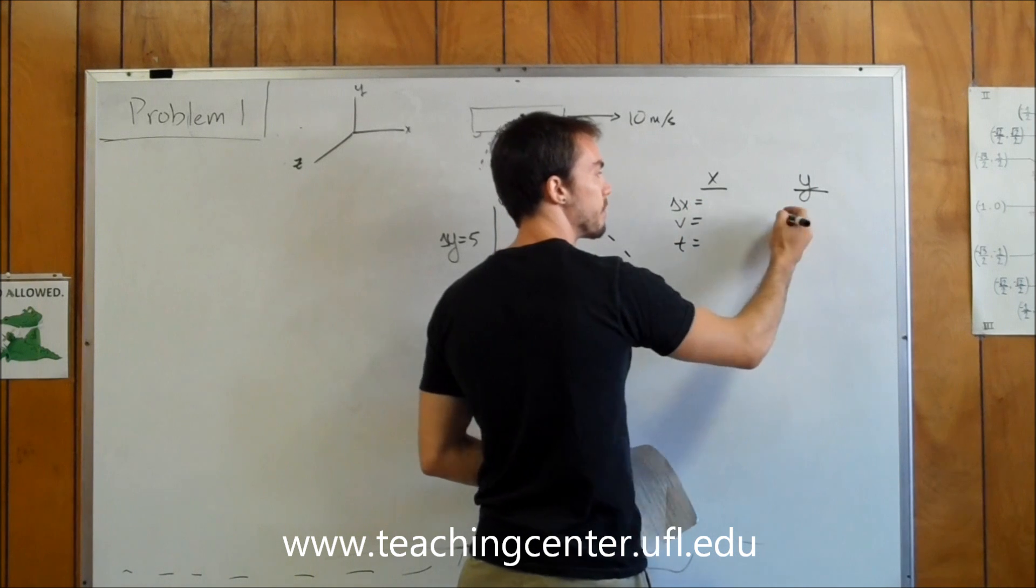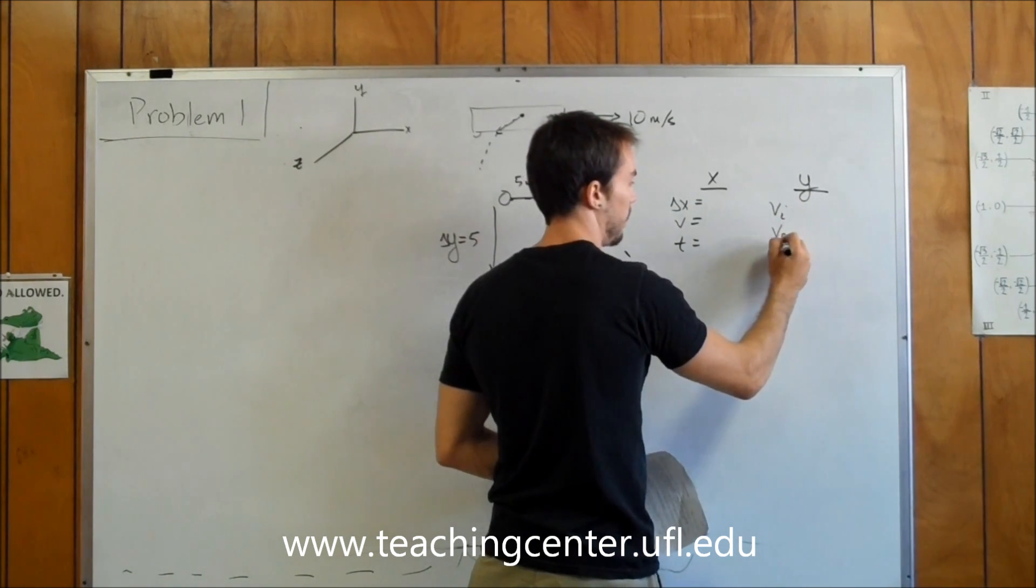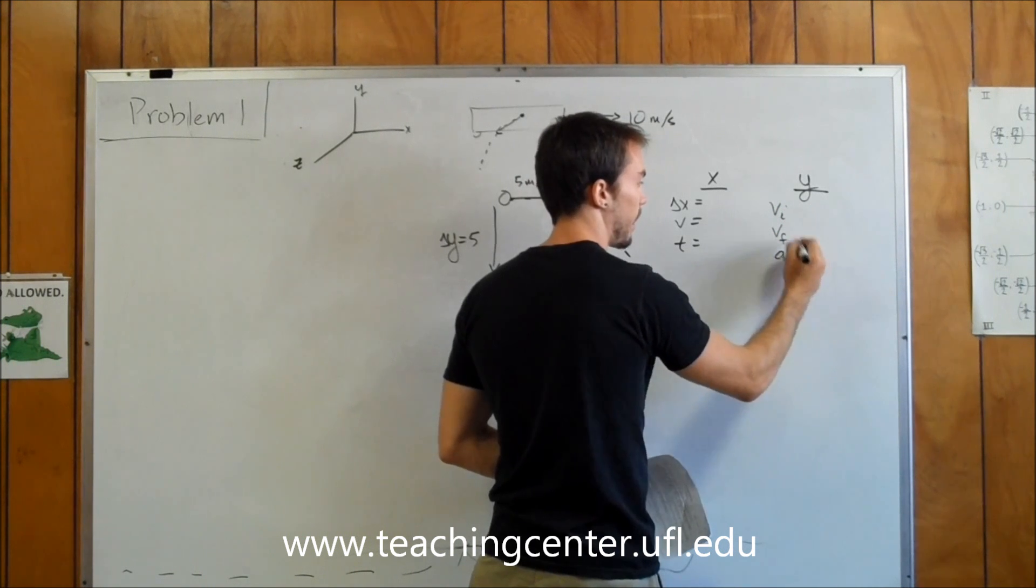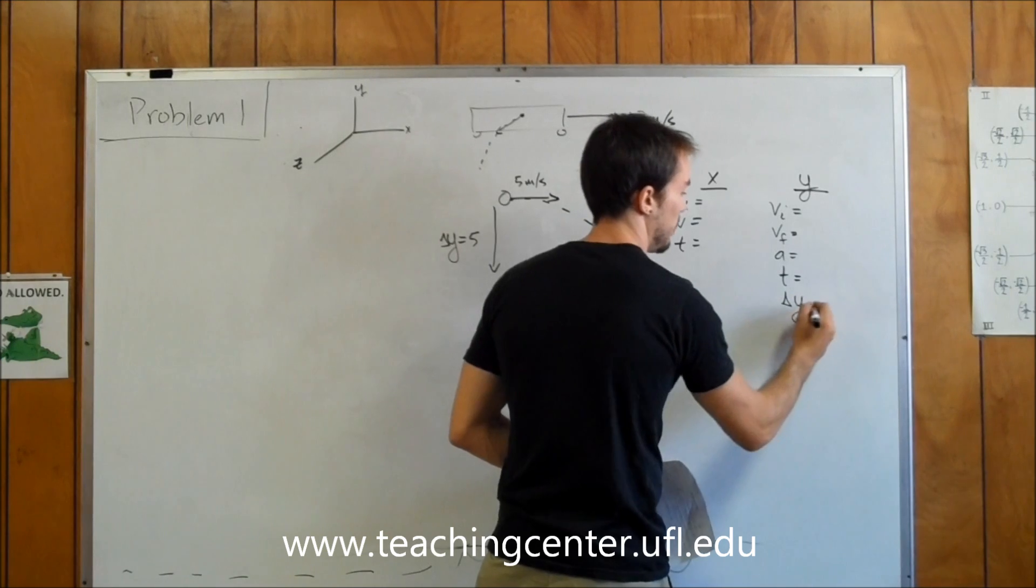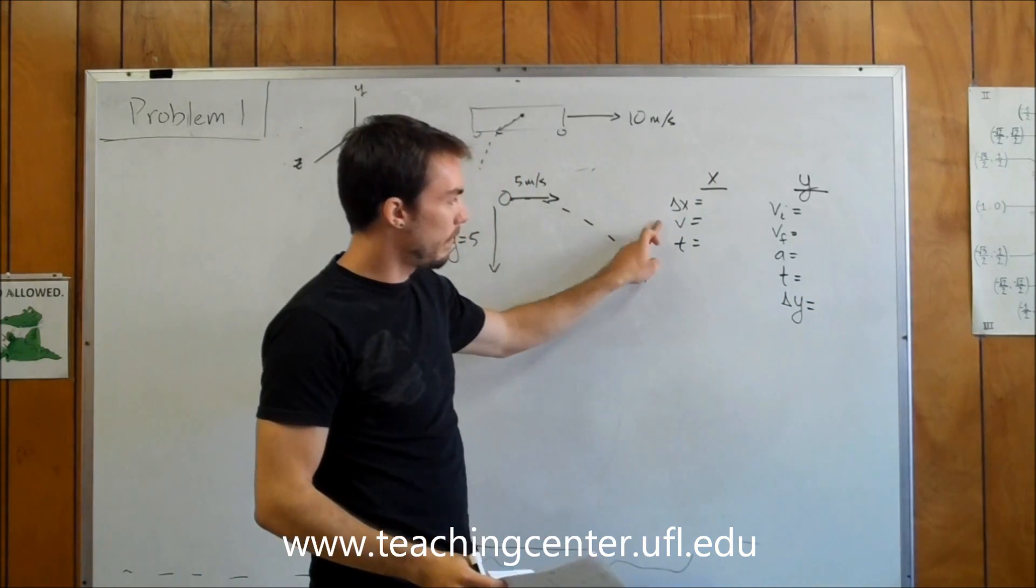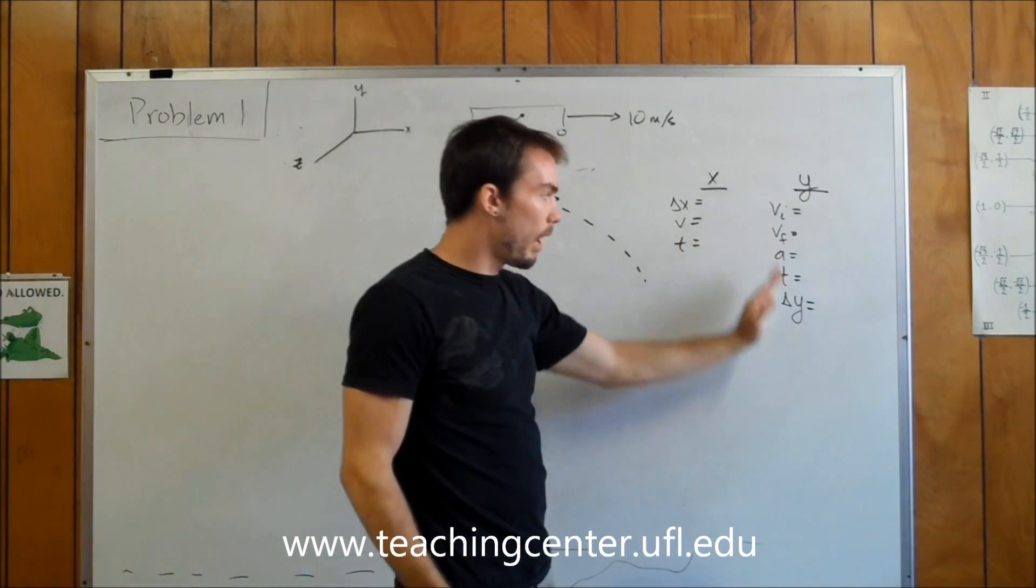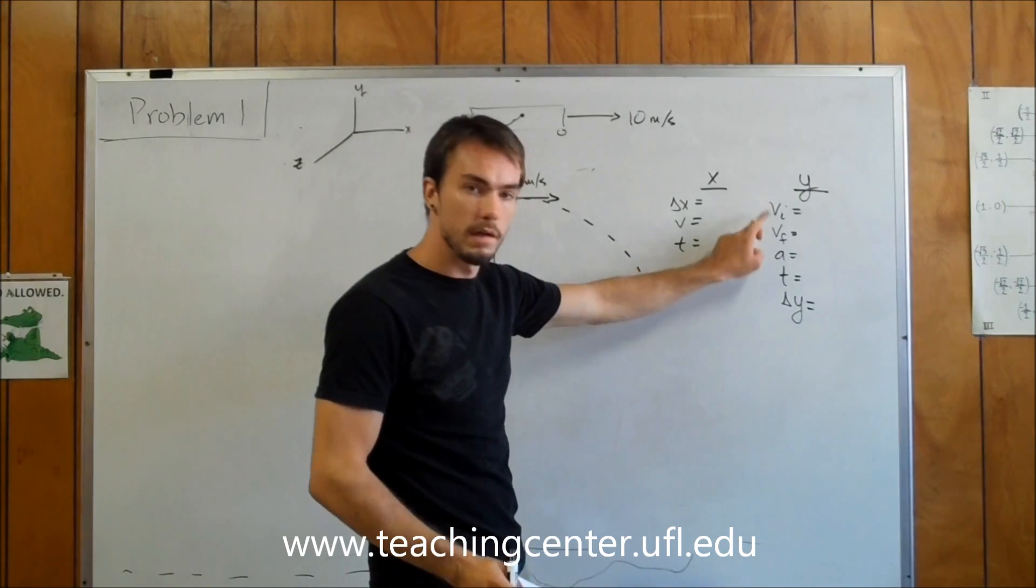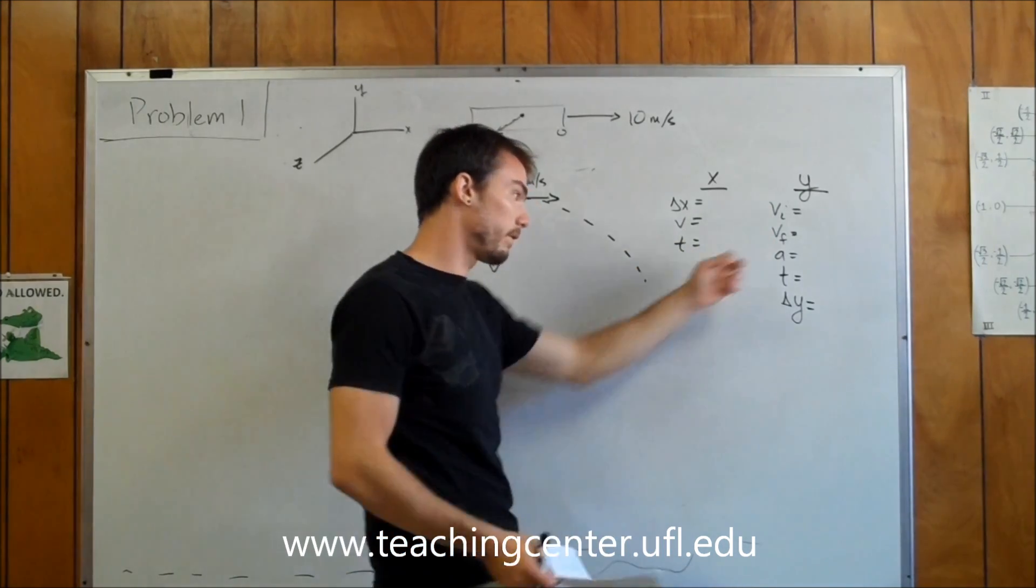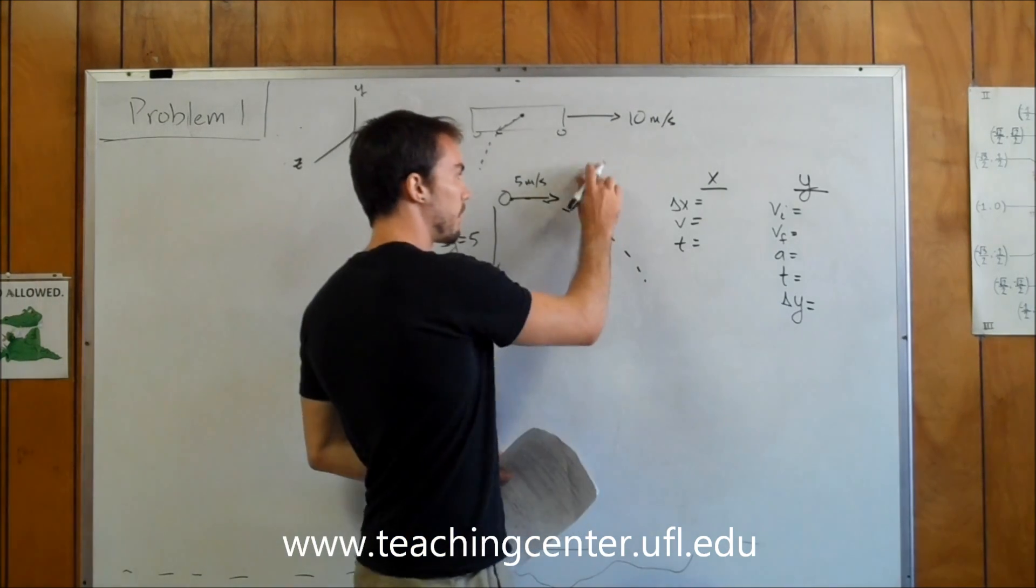Whenever I do a projectile motion problem, I like to label out all my possible variables. In the X, you always have these three components: delta X, velocity, and time, because we do not have acceleration. In the Y, we always have acceleration equal to gravity. Therefore, we have an initial and a final velocity, as well as our acceleration, time, and displacement vectors.